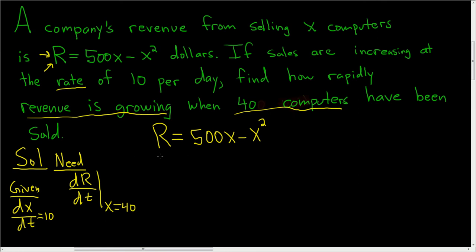The next thing to do is to differentiate both sides of this equation with respect to time. So dR/dt is equal to, well, 500 is a constant, so this is just 500 times the derivative of X with respect to time. Well, that's just dX/dt.